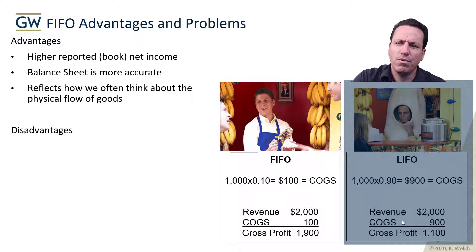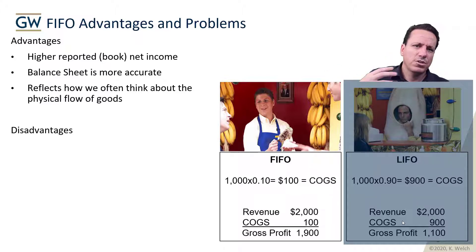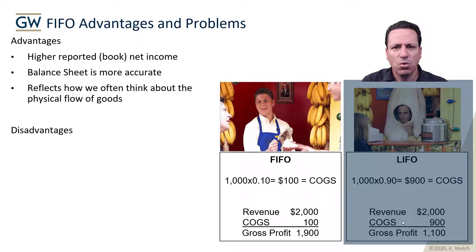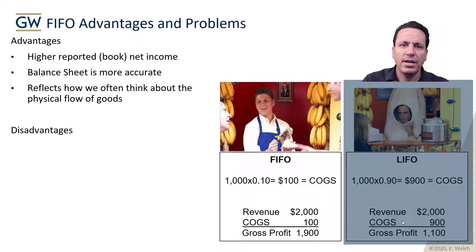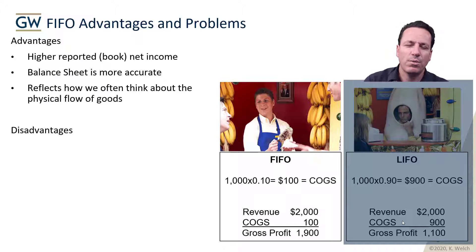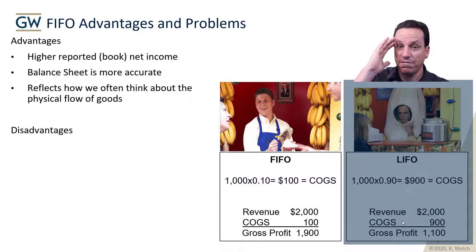The other thing about FIFO is it reflects how you often think about the physical flow of goods. Most of the time, people think about cycling through the oldest items first. Think of a grocery store with dairy — you want to get rid of the oldest items before expiration before getting into the new ones. So the advantage of FIFO is that it often reflects the physical flow in a good way and it prioritizes the balance sheet.